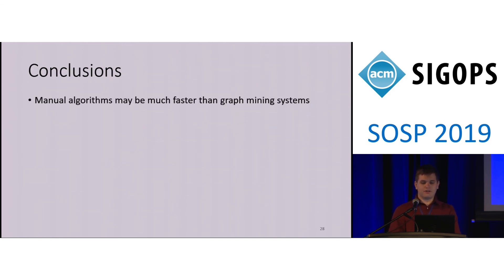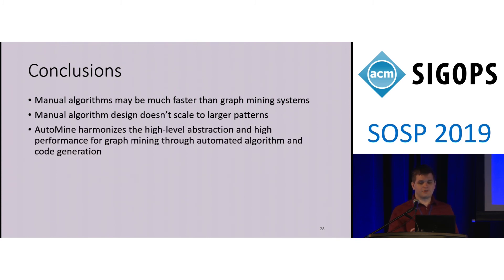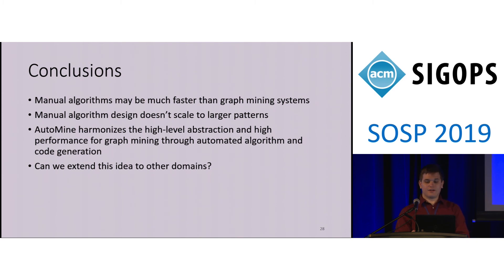So what have we learned? We know that manually designed algorithms can substantially outperform graph mining systems that prioritize generality, but manually designing algorithms is so time-consuming that we can't expect the algorithms community to do all that work for us. AutoMine tackles this by harmonizing the high-level abstraction of general mining systems with the high performance of manual designs by automating the algorithm design process. Can we extend this idea to other domains? Abstracting away the algorithm design process can help users and programmers alike, and we hope to see the idea pushed in as many directions as possible.